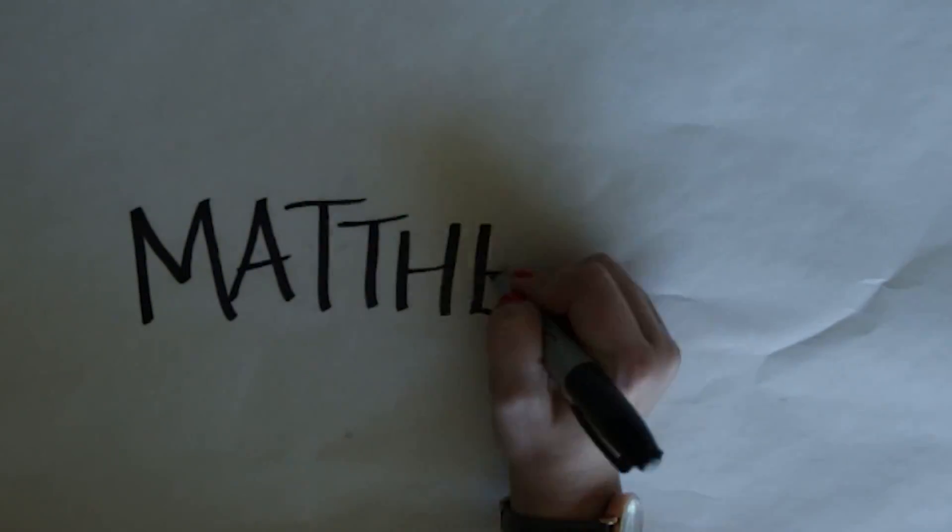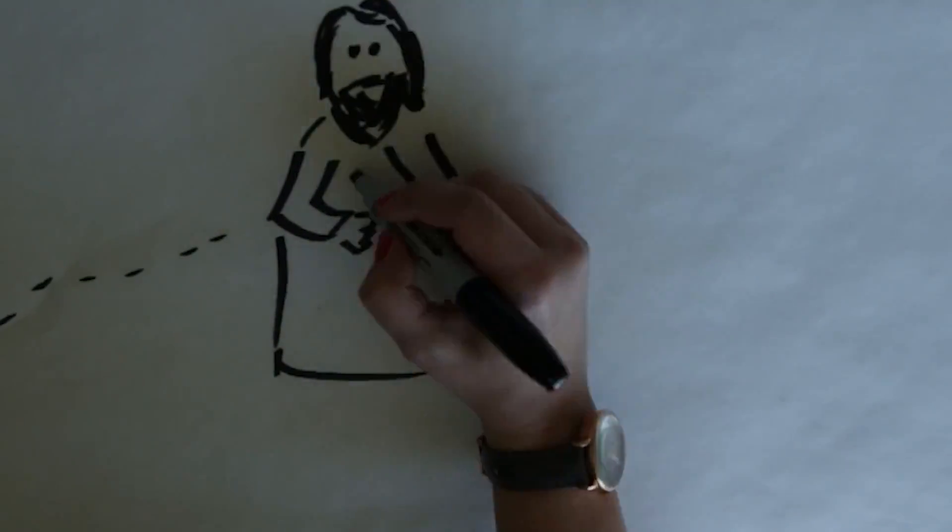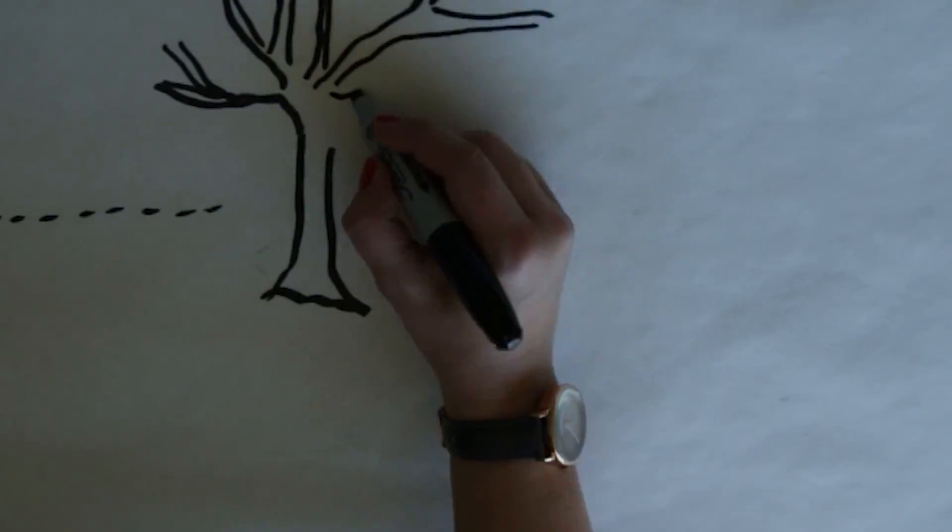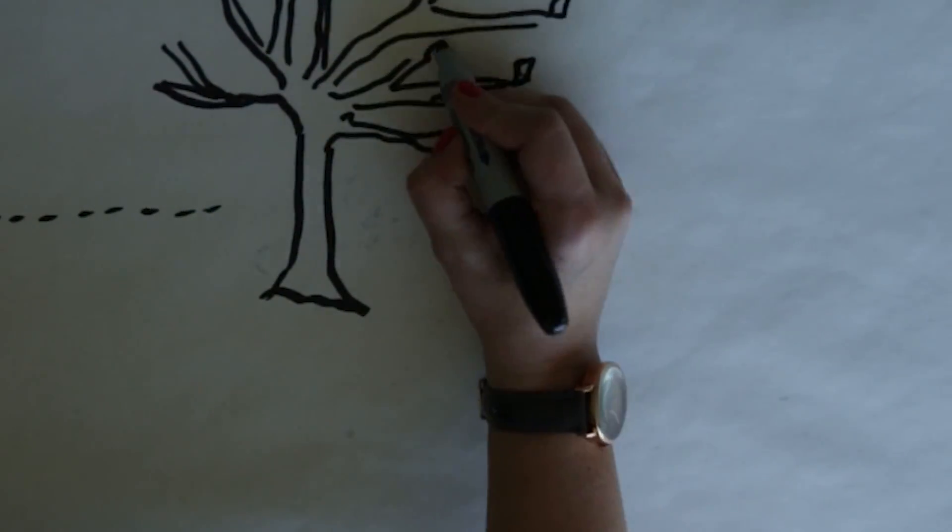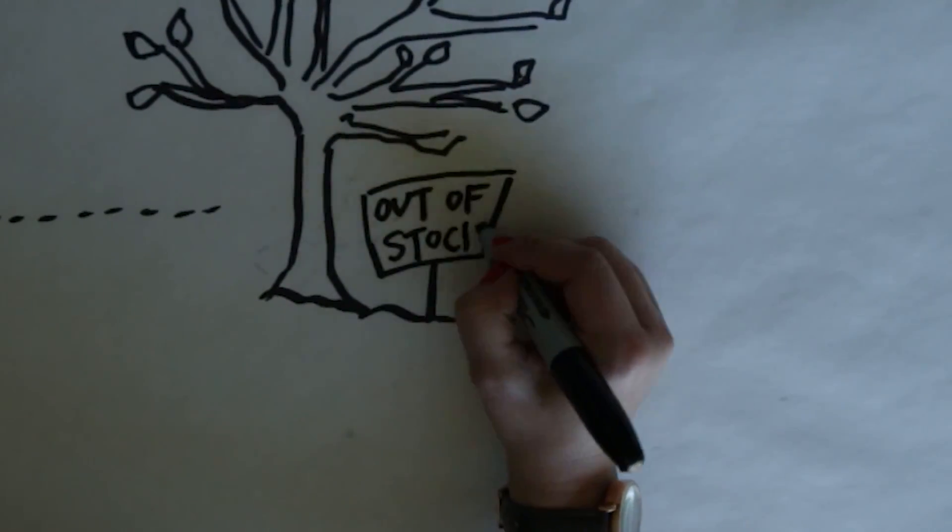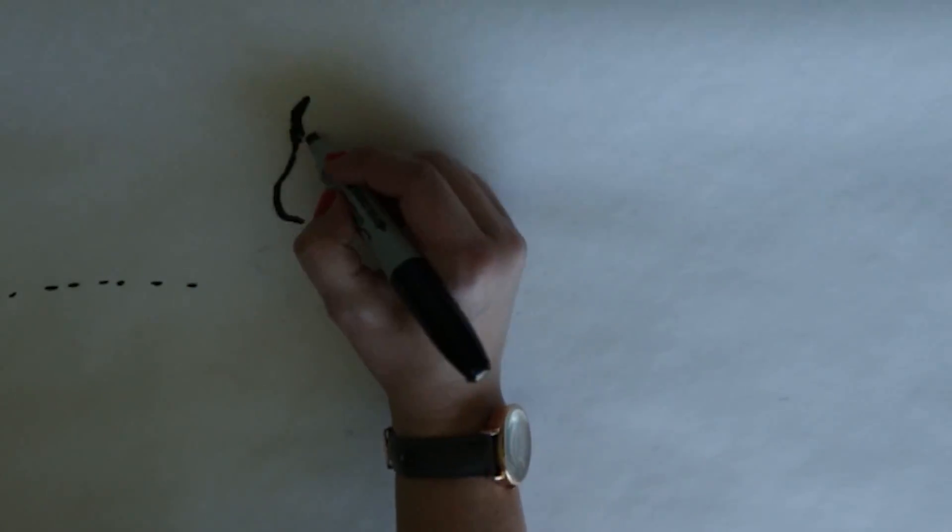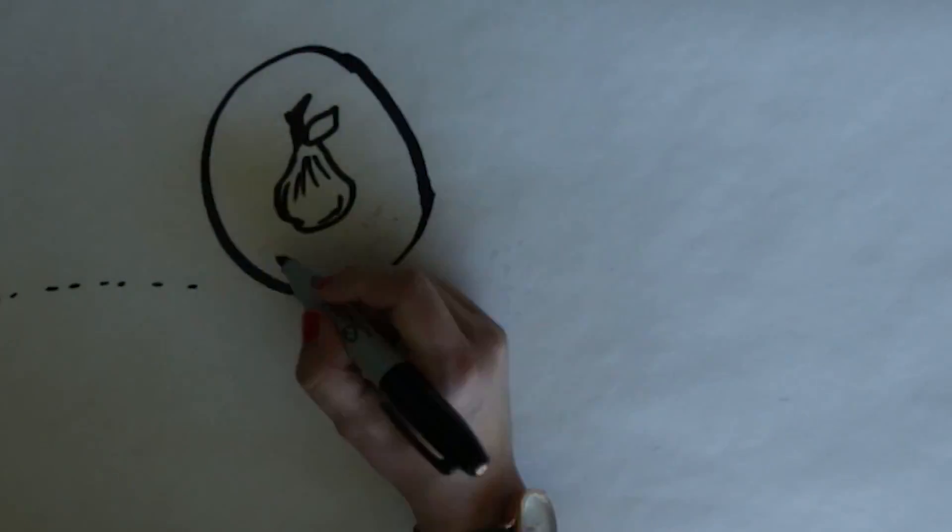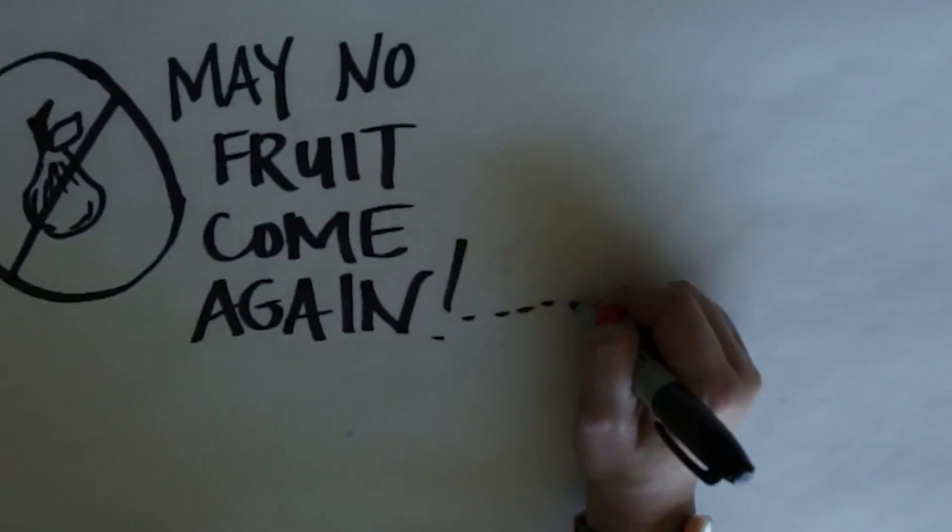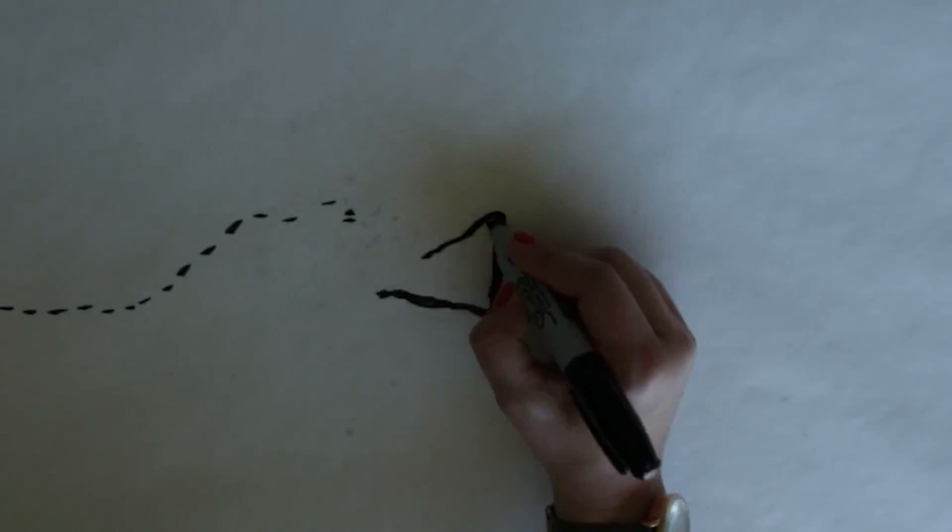In Matthew, Jesus was hungry. So as he traveled, he walked up to a fig tree, but it bore no fruit. Jesus cursed this tree, saying, may no fruit ever come from you again. And at once the tree withered.